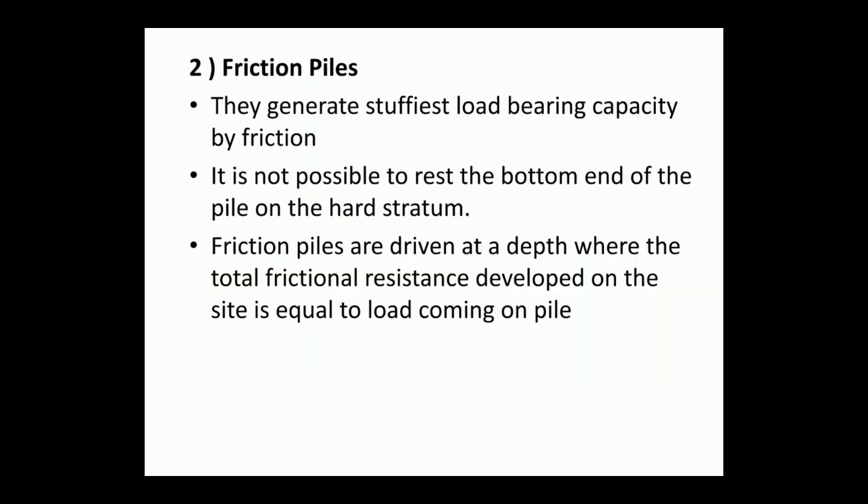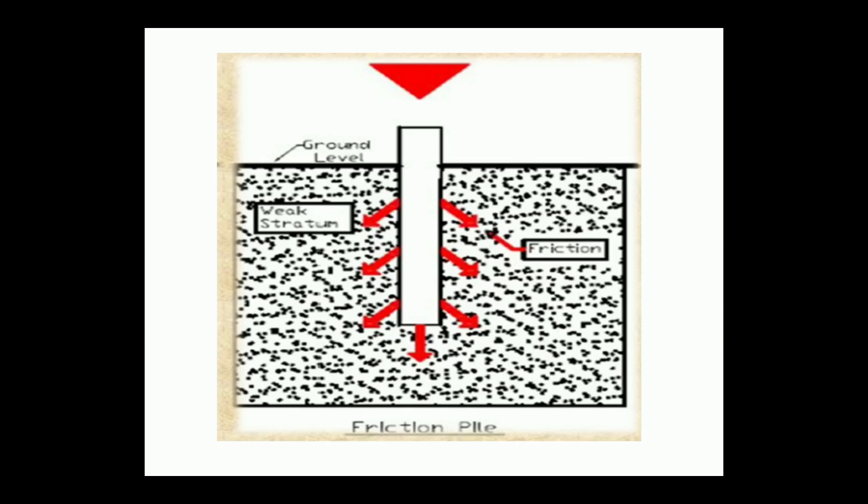Friction piles generate sufficient load bearing capacity by friction, so they do not rest on a hard stratum. Friction piles are driven at a depth where the total friction resistance developed on the surface is equal to the load coming on the pile. The figure shows a friction pile in which the load from the structure is resisted by the friction between the surface of the pile and the surrounding soil.